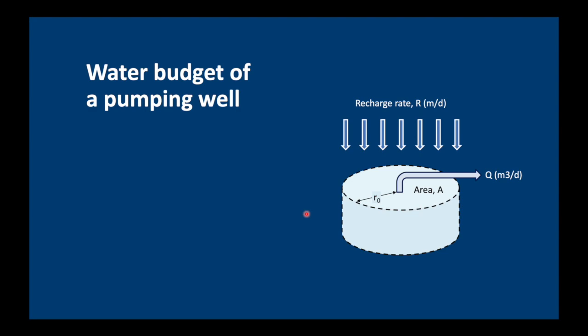In a previous video we talked about the water budget of a pumping well. We said that if the discharge is balanced exactly by the recharge, we might reach steady state. In most situations, however, the amount of water leaving a system is not the same as the amount coming in, and the equation has to be balanced by a change in storage.